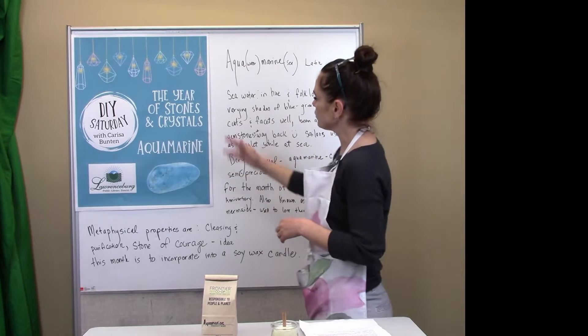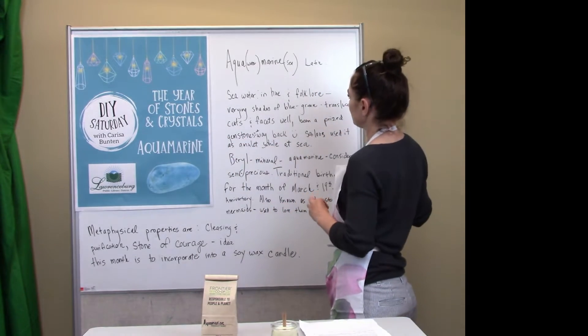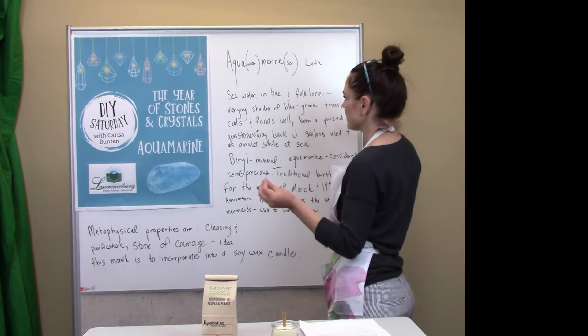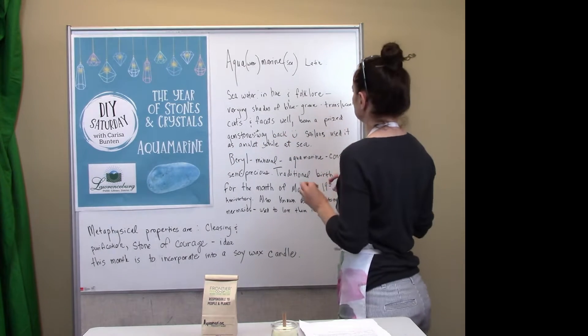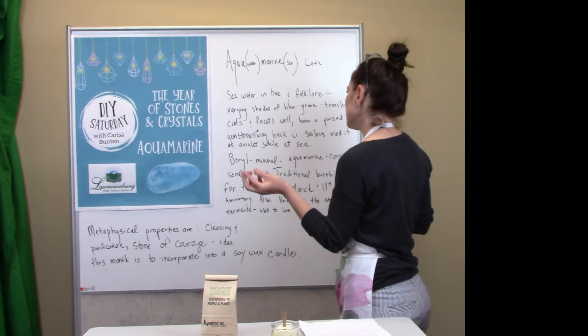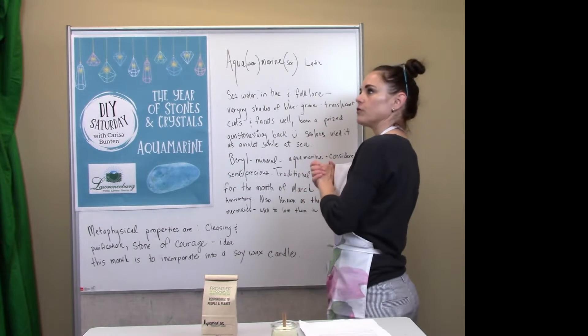And so, since we are mostly probably familiar with aquamarine, we could see where they would derive this name because in hue and folklore, the stone or the mineral has varying shades of blue and green. It's generally translucent, it cuts in facets well, and it has been prized as a gemstone since way back historically.